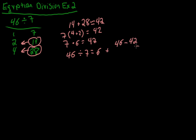it would be 46 minus 42 over whatever we were dividing by. In this case, 7. And this part right here is the remainder.